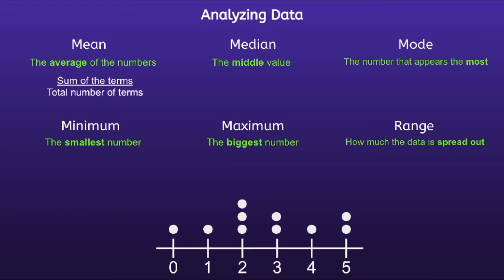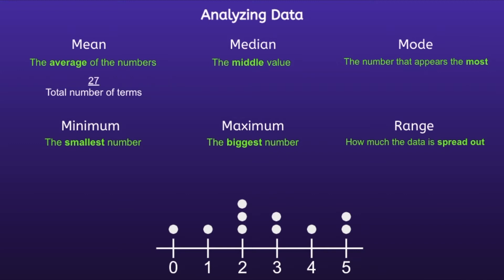So let's start with the mean. In order to find the mean, we take the sum of the terms and divide it by the total number of terms. So the sum of the terms would be zero plus one plus two plus two plus two plus three plus three plus four plus five plus five. When I add all of those together, I get 27. Now we have to divide that by the total number of terms. If we look in the line plot, we can see that there are 10 total terms. So 27 divided by 10 is equal to 2.7.